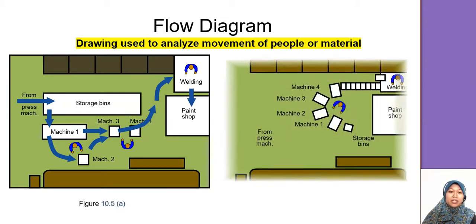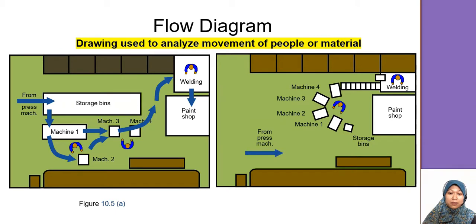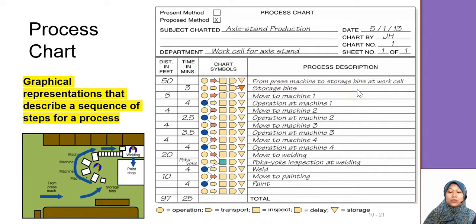After improvement, they rearranged the machines, the storage bin, and the flow. The new layout goes straight to a smaller storage bin, then machines one through four in sequence, then to welding, and straight to the paint shop. They reduced manpower to two workers, reduced the storage bin size, and arranged everything in a U-shape.